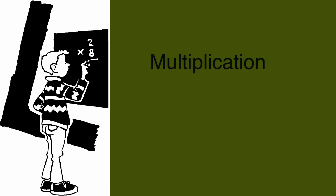Multiplication is a shortcut way to talk about repeated addition. To write this, we first write down the number of times we are going to repeat a number, then we put a multiplication symbol in, and then we write the number that we want repeated. The multiplication symbol can be written in several ways. I personally prefer the star symbol, so that's the one we will be using.